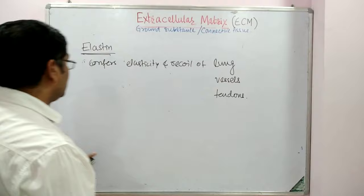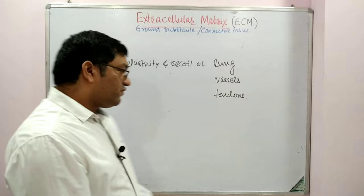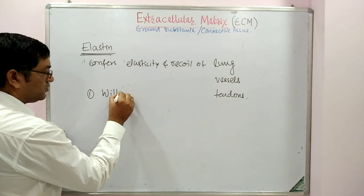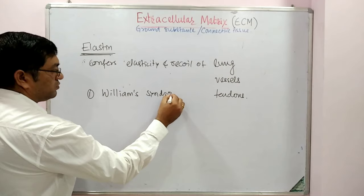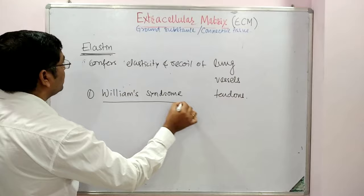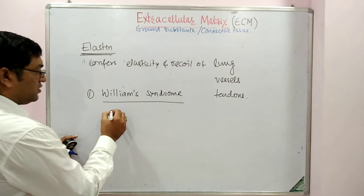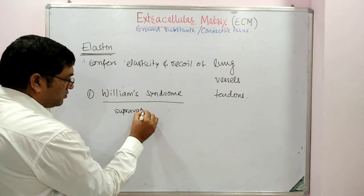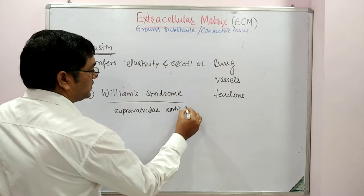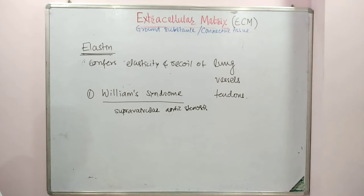What are the various disorders related with elastin? The first one is Williams syndrome — it is due to a defective gene for elastin. Williams syndrome results in formation of supravalvular aortic stenosis.